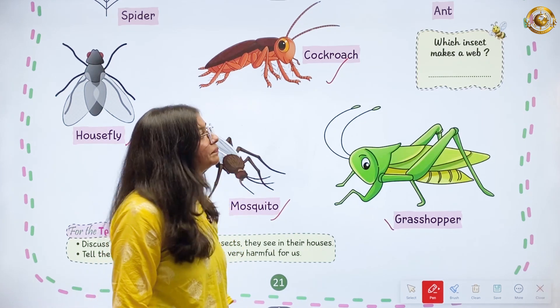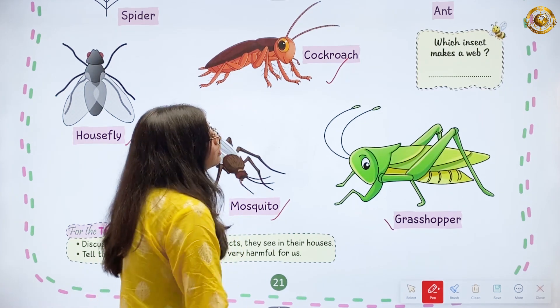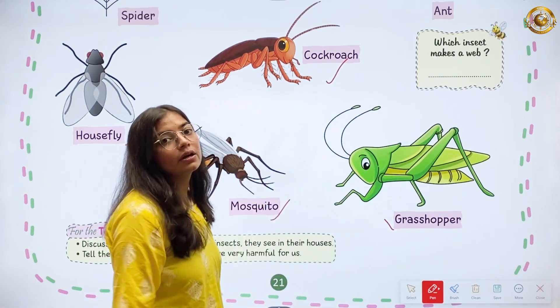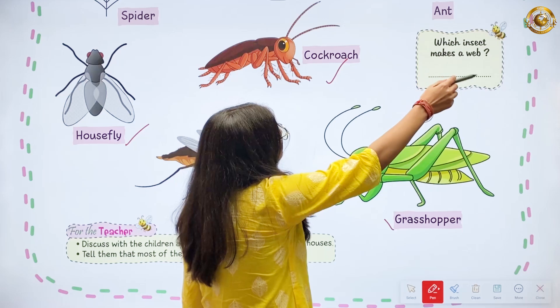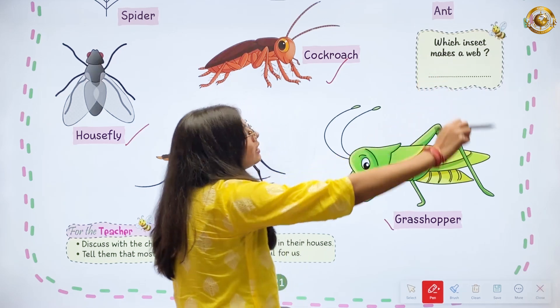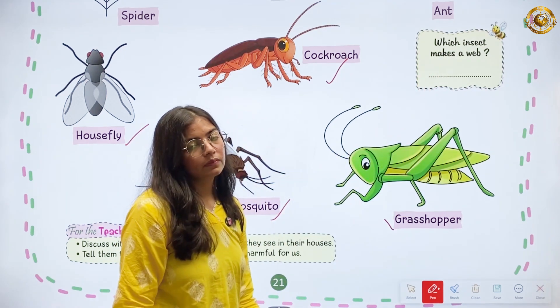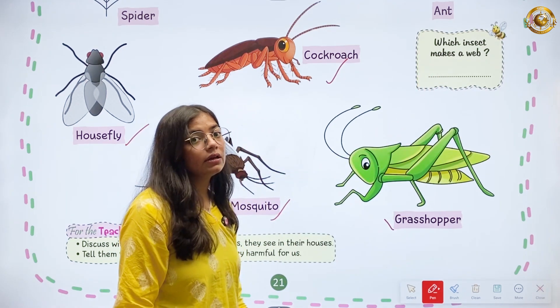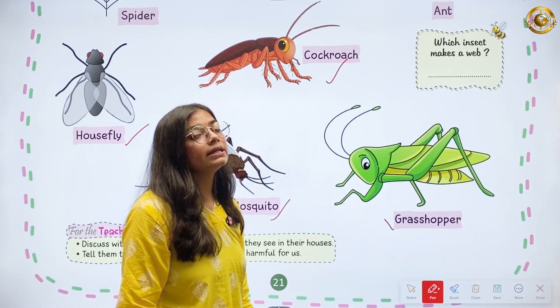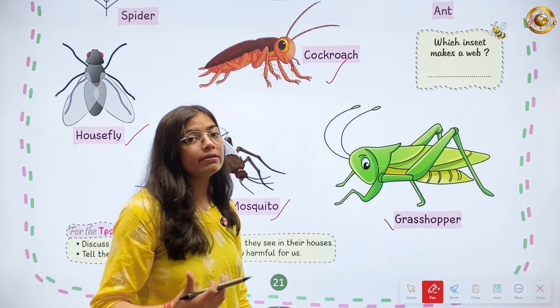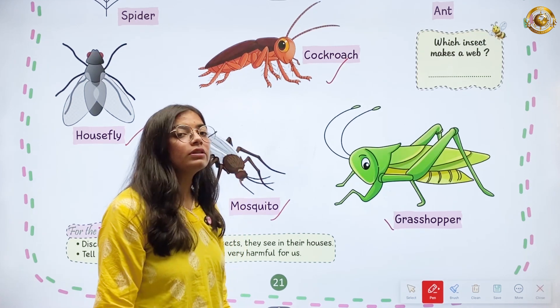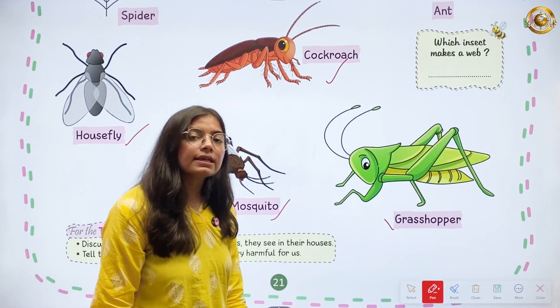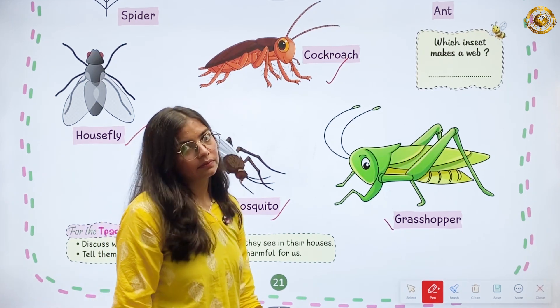Okay, so they are asking a question: which insect makes a web? Yani ki kaunsa insect jala banata hai? So the answer is spider.